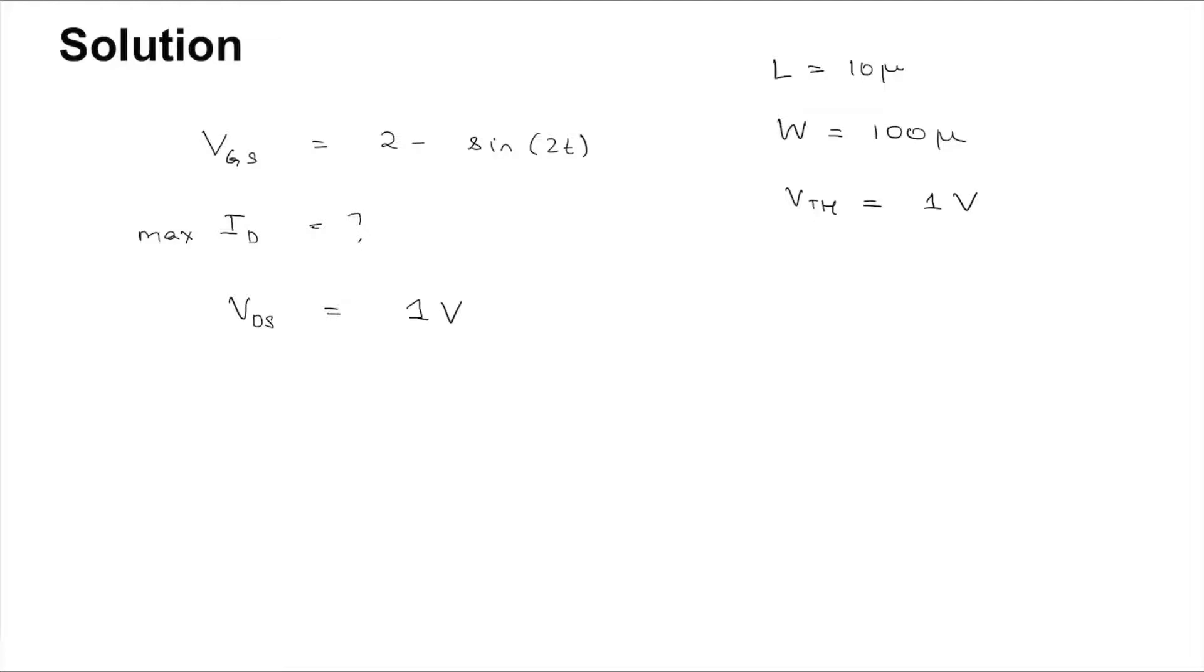As long as the gate to source voltage is greater than the threshold voltage and the drain to source voltage is non-zero, the transistor will have a non-zero current that is monotone increasing with its gate to source voltage. That is, if VGS is greater than VTH, then as VGS increases, ID increases for any VDS greater than 0. Given that VDS is 1 volt and that the max value of VGS is 2 minus minus 1 which is 3 volt, we will get the max current ID for the max VGS, that is 3 volt.